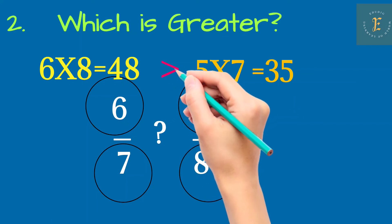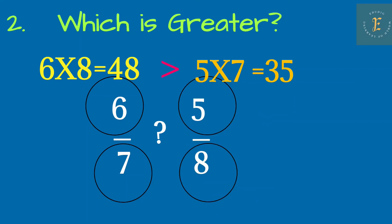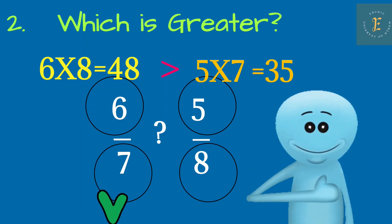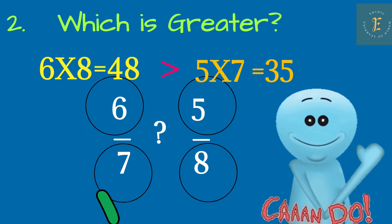By seeing this, you can identify 48 is greater than 35. So your fraction 6 by 7 is greater than 5 by 8. Yes, you can do it this way also.